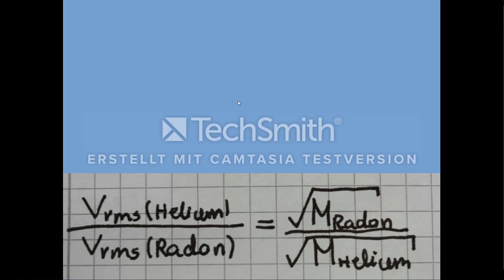So now we are left with the following equation. The root mean square speed of helium divided by the root mean square speed of radon is equal to the square root of the molar mass of radon divided by the square root of the molar mass of helium.